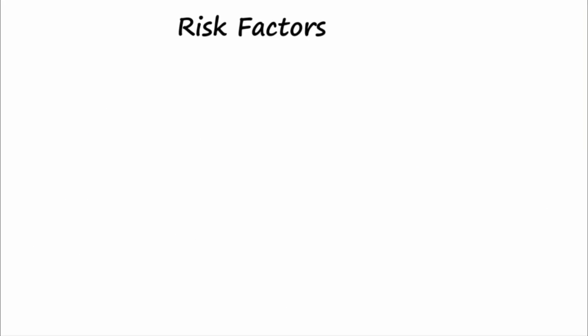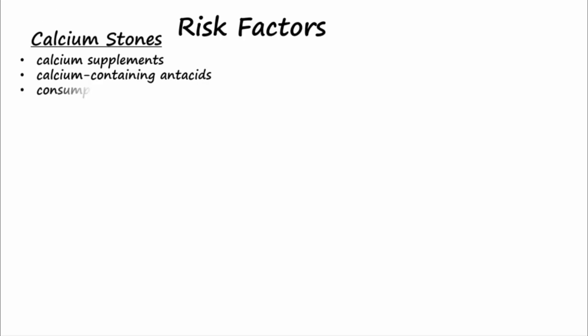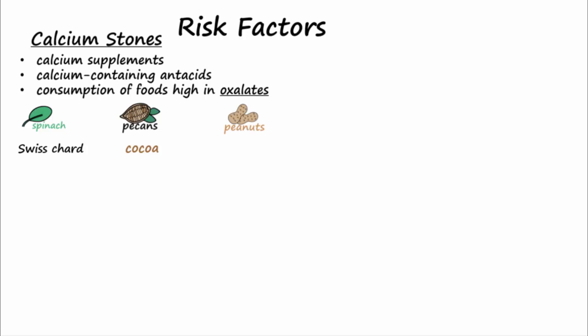There are many risk factors for stone formation, including stone-forming constituents such as calcium and oxalates. Taking calcium supplements or regularly using calcium-containing antacids increases the risk for calcium stones. Oxalates are found in spinach, Swiss chard, cocoa, pecans, peanuts, soy products, and other foods, and increase the risk for calcium oxalate stone formation.